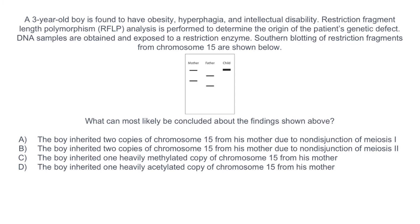Let's do a question. A three-year-old boy is found to have obesity, hyperphagia, and intellectual disability. Restriction fragment length polymorphism analysis is performed to determine the origin of the patient's genetic defect. DNA samples are obtained and exposed to a restriction enzyme. Southern blotting of restriction fragments from chromosome 15 are shown below. What can most likely be concluded about the findings shown above?